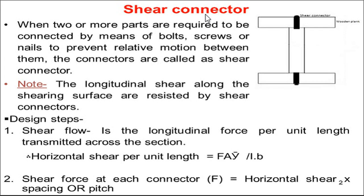In old days, in wooden structures, they made a somewhat extended part that was fixed into a pole to avoid movement of these particular joints. But nowadays, due to advanced technology, we have different connecting members: bolts, nuts, nut bolts, rivets, cotter pins, and welding. If we use these media for connection to prevent motion of the body, that particular part is called a connector. The main function of that connector is to avoid shearing — that is why it is called a shear connector.